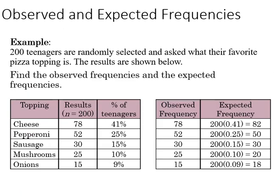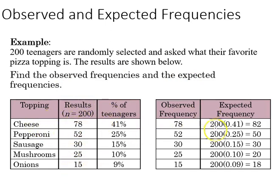Here's an example. We've got 200 teenagers randomly selected and asked what their favorite pizza topping is, and the results are shown below. We're going to find the observed frequencies and the expected frequencies. In this table we've got both the observed frequency taken from the distribution, and the calculated frequency multiplying the proportion by the sample size.